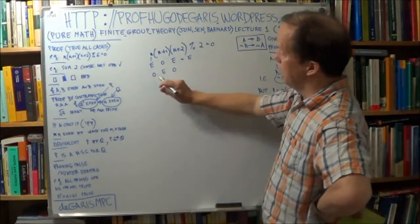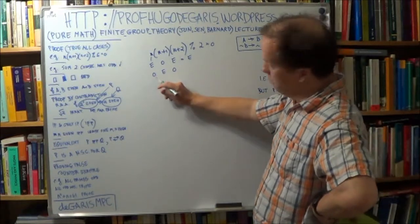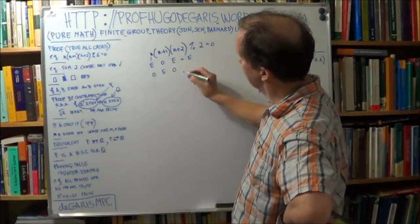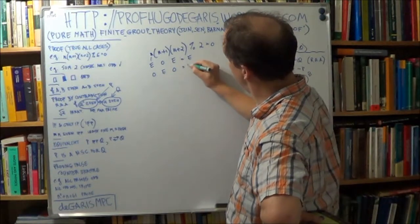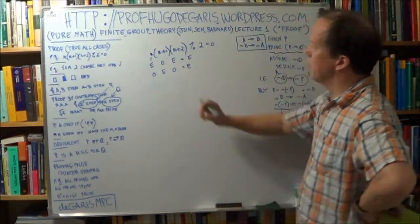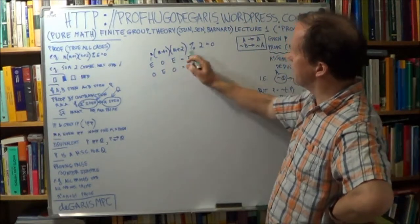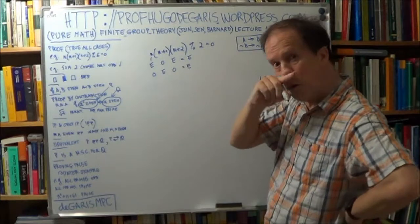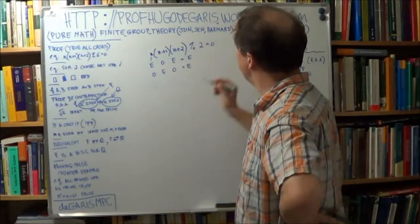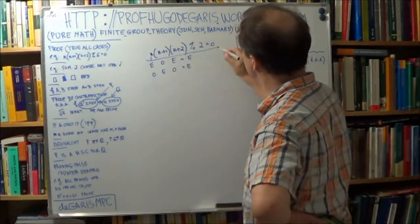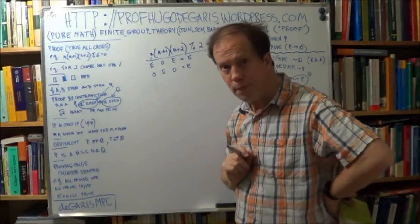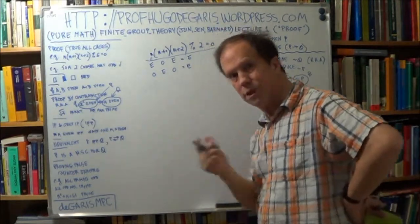That has to be an even number. In fact, any number that has an even factor in it is even. Okay? So either way, the product is even, and therefore you can divide by 2. So this is true. Follow that logic? If not, rewind, go back until it's obvious.